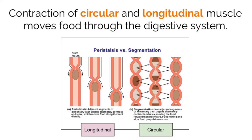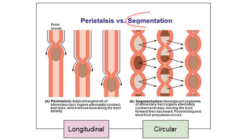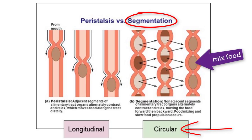Peristalsis occurs in the esophagus, stomach, and intestines. Next, we have another type of movement called segmentation. This moves different, non-adjacent portions of the small intestine back and forth with relaxing and contracting circular muscle. The main purpose of this muscle movement is not to move food from one end to the other, but instead to mix food with enzymes so it can be properly broken down.